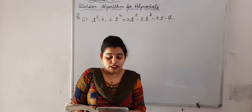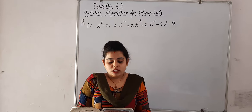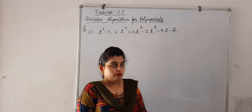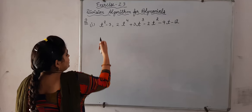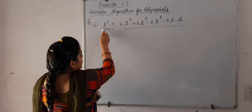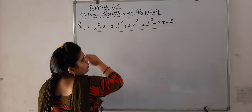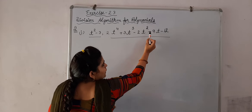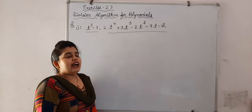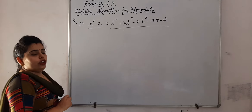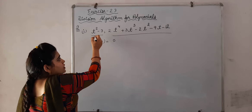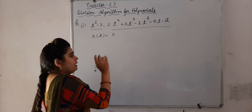We have to do the second question. In the second question, check whether the first polynomial is a factor of the second polynomial by dividing the second polynomial by the first polynomial. We will use the division method. If the remainder comes equal to 0, then the first polynomial will be a factor of the second polynomial.